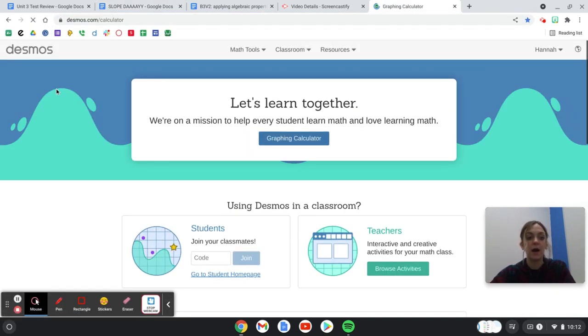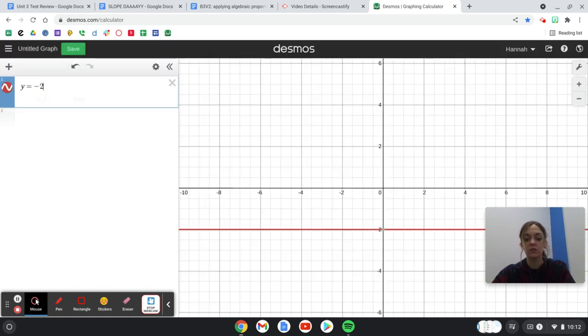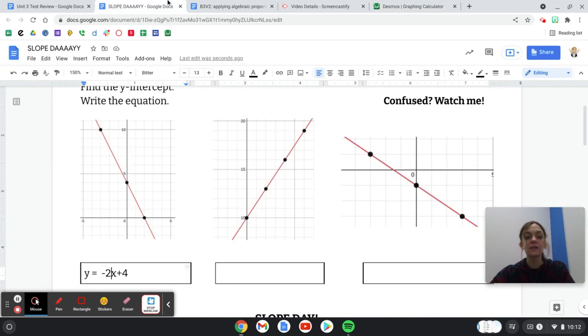You'll just go to Desmos and graph y equals negative 2x plus 4, and your graph and this graph should look exactly the same, which is good because they do.